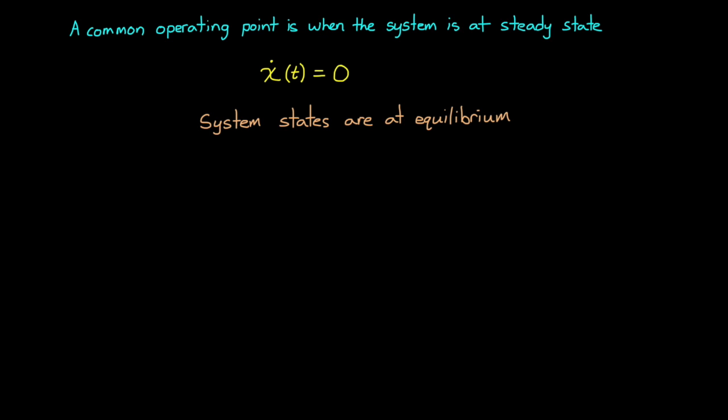Now, an important and very common type of operating point is when the system is at steady state, or equilibrium. This means that if you initialize the system at this state, then the states would not change over time. Or another way of putting it, x dot for all time equals 0. That might mean that the system states are at an equilibrium on their own, with no external inputs, like a pendulum that has two equilibrium points, one hanging straight down, and one perfectly balanced, pointing straight up.